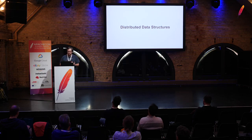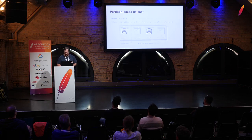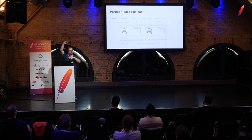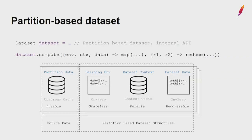Apache Ignite has a connection to Apache Spark 2 — you can load data from Apache Spark DataFrame operations to train in in-memory mode. Like Apache Spark, it uses internally distributed data structures presented as a partition-based dataset. This is an abstraction layer between machine learning algorithms and the storage — Apache Ignite caches. It uses a MapReduce-like approach to perform computation.